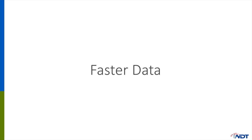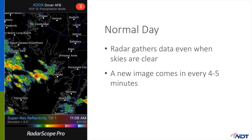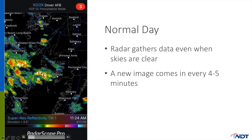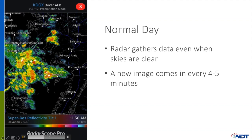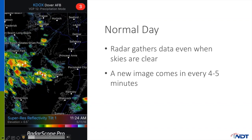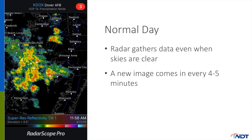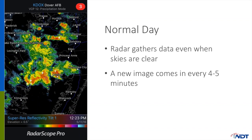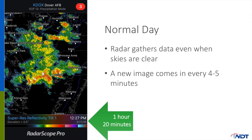Radars are always on — night or day, storms or clear skies. Here we have a loop of data on a normal day with rain showers. You can see the showers are moving to the northeast. Watching the clock, the images are coming in about every four to five minutes, so this loop is about an hour and 20 minutes long.